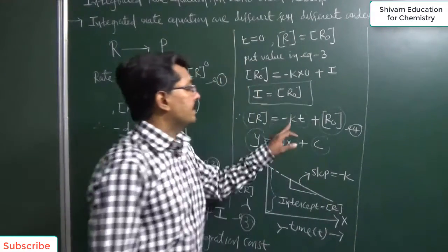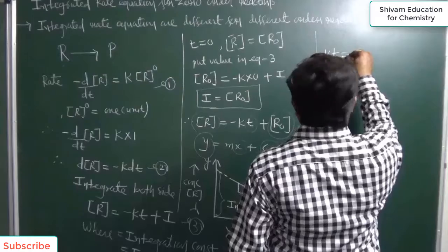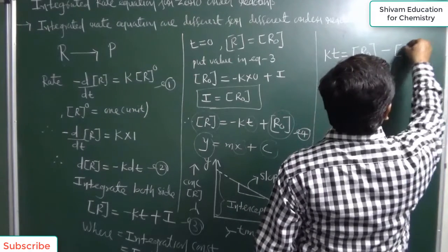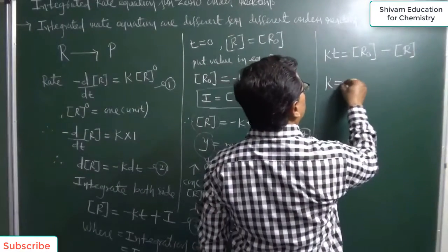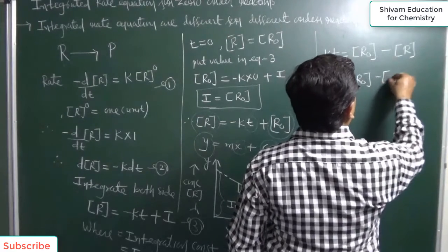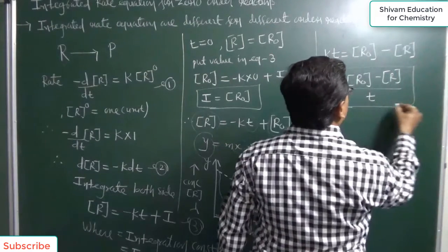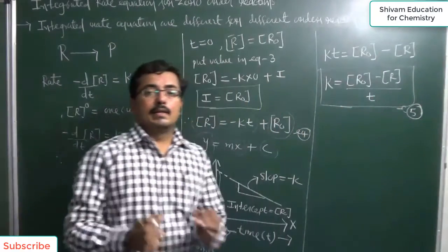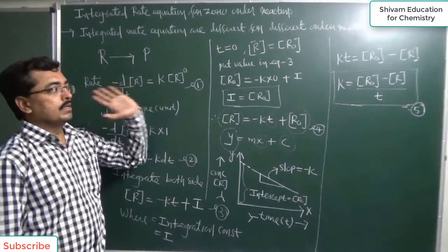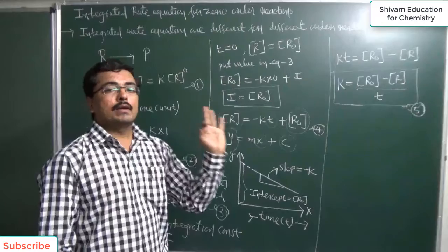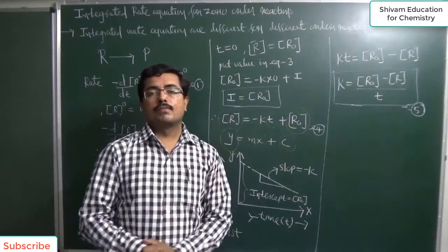Further simplifying equation 4, taking minus kt to one side and R to the opposite side, the equation becomes kt equal to R₀ minus R, and therefore k equal to (R₀ minus R) upon t. This equation number 5 is the integrated rate equation for zero order reactions.